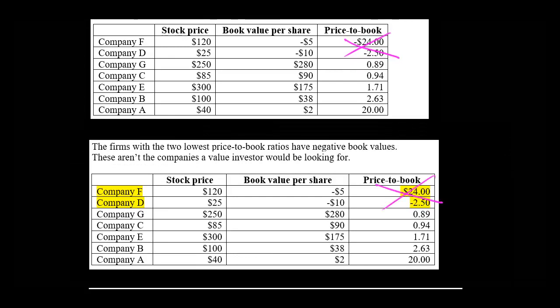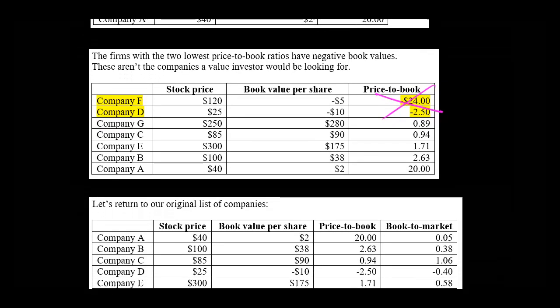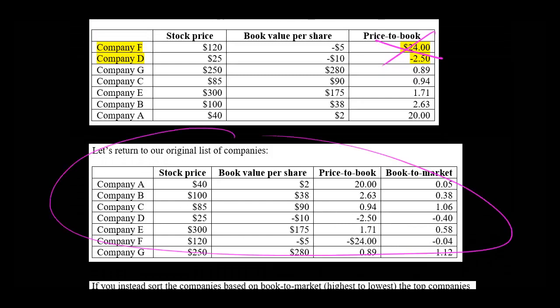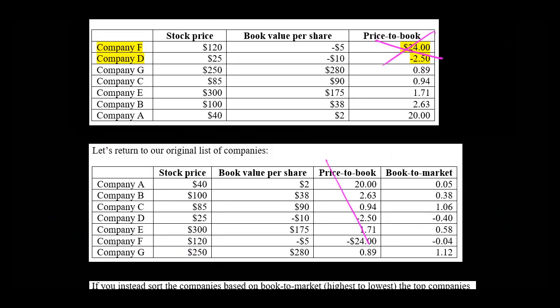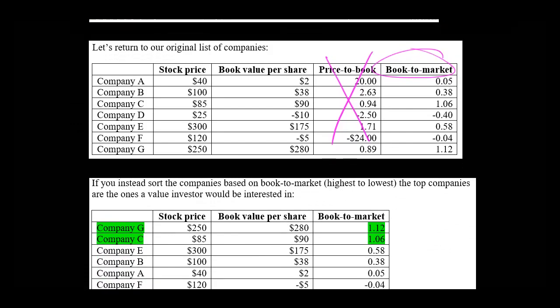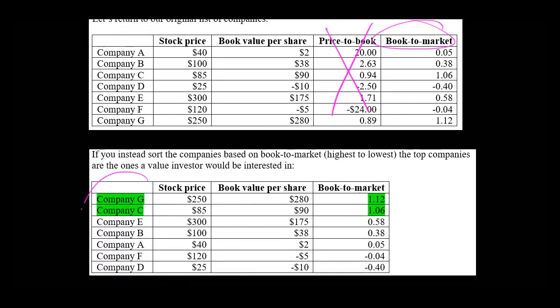But an easier way of doing it would be to just sort based on book-to-market instead. Here's our original list of companies again. Forget about price-to-book — we're going to sort based on book-to-market, and then we're going to want the ones that have the highest book-to-market. Here's the same list of companies, now sorted based on book-to-market, with the highest ones at the top and the lowest ones at the bottom, because with book-to-market, if you're a value investor, you want companies with the highest book-to-market ratio.